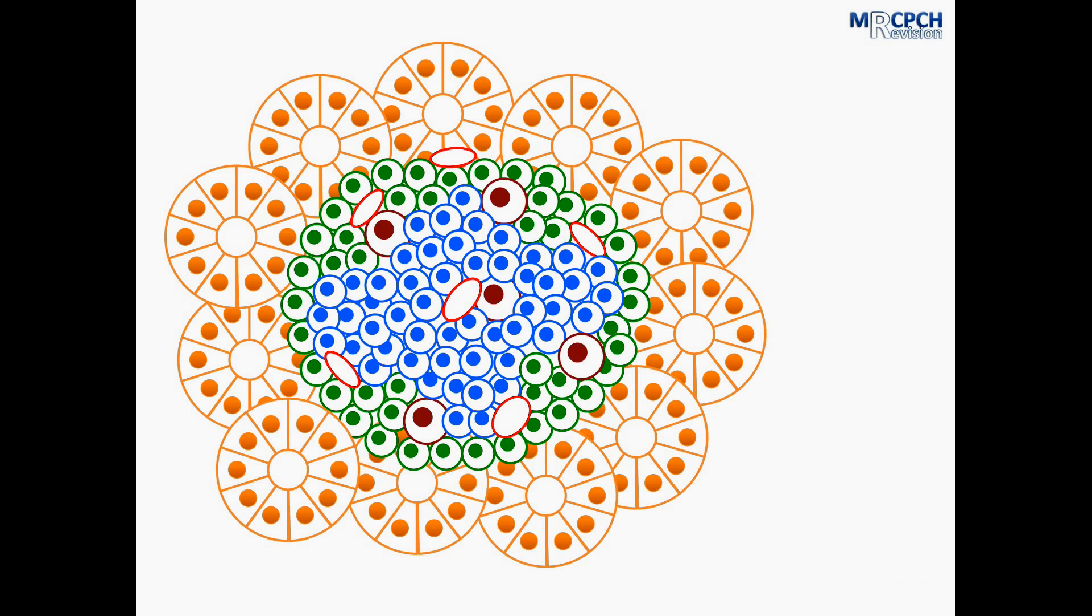So let's begin by taking a look at the pancreas. Here we have a diagram representing the microscopic structure of the pancreas. On the outside in orange we can see the acini. These are the cells which produce digestive enzymes and make up the exocrine pancreas. These make up by far the majority of the mass of the pancreas, in the tune of between 97 and 99% of the pancreatic mass.